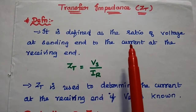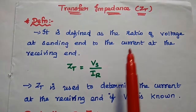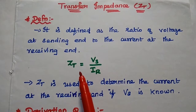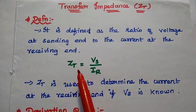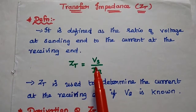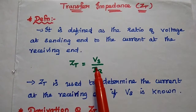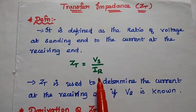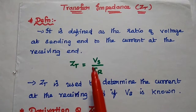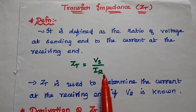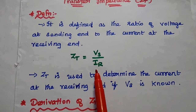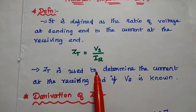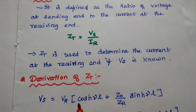Next, we derive the transfer impedance, denoted Zt, where t stands for transfer. Transfer impedance is defined as the ratio of sending end voltage to the receiving end current. It relates the sending end and receiving end. Transfer impedance Zt is used to find out the receiving end current.